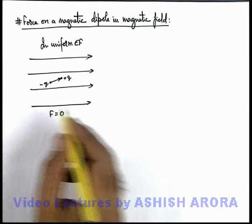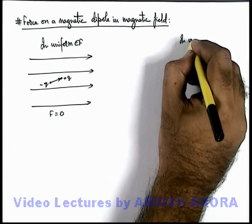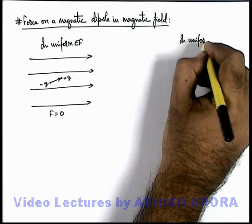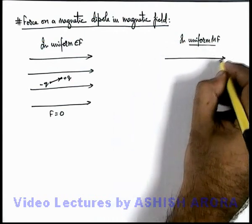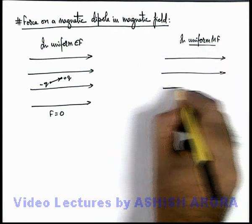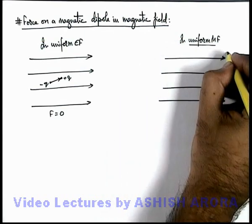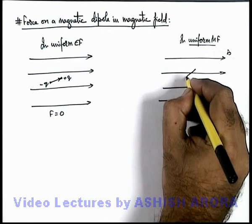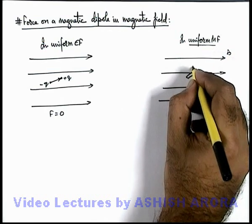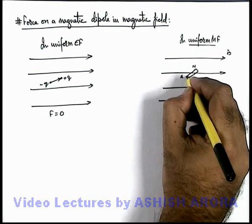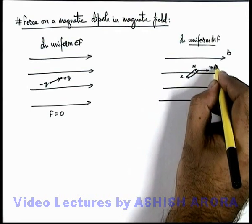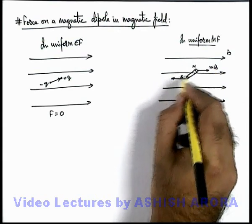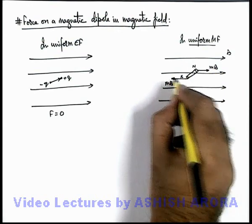So here similar to this we can write that in uniform magnetic field, if we are given with a magnetic induction B, and a short magnetic dipole is placed with one north and south pole placed like this, the north pole experiences a force mB toward right and south experiences a force mB toward left.